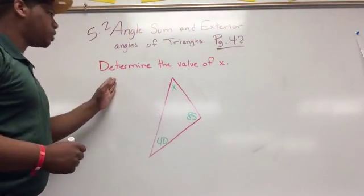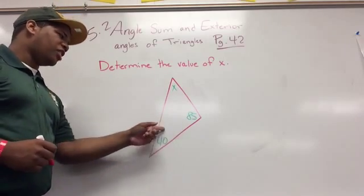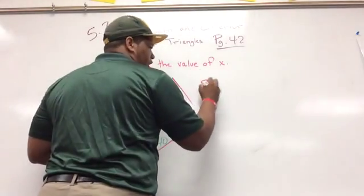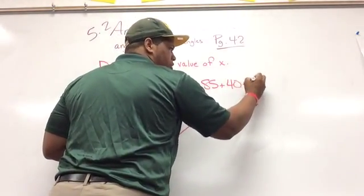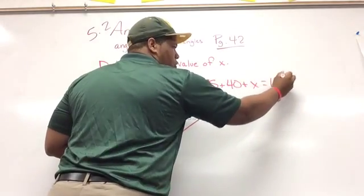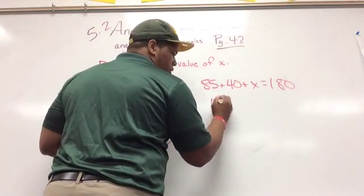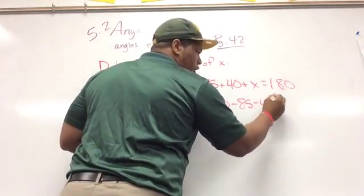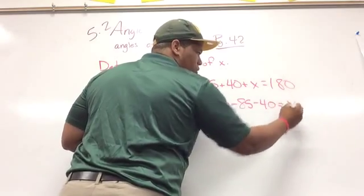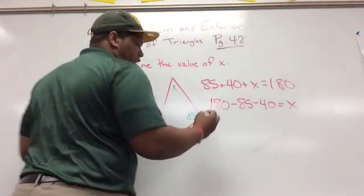Okay, on this one I'm told to determine the value of x again. I'm given 85, 45, and 40 plus x, so I know that 85 plus 45 plus 40 plus x is going to equal 180. So I can put it 180 minus 85 minus 40 is going to equal x.